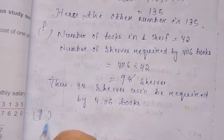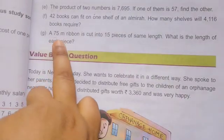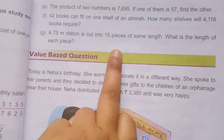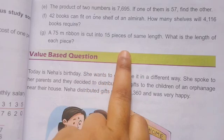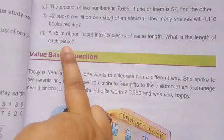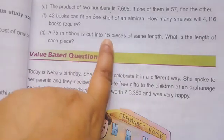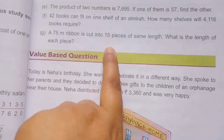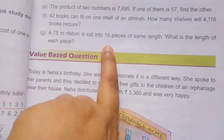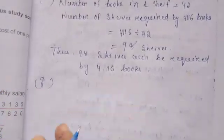Now solve G. A 75-metre ribbon is cut into 15 pieces of the same length. What is the length of each piece? First write: 15 pieces of ribbon have a length equal to 75 metres. Then one piece of ribbon has length equal to 75 divided by 15.